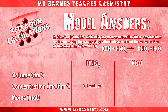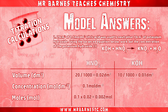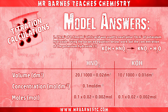Question two: work out the concentration of potassium hydroxide when 20 cm³ of nitric acid is used and its concentration is 0.1 molar. First, convert volumes into dm³ by dividing by 1000: 0.02 dm³ of nitric acid and 0.01 dm³ of potassium hydroxide. Second, calculate moles of nitric acid: concentration × volume = 0.1 × 0.02 = 0.002 moles. Third, the ratio of KOH to HNO₃ is 1:1, so moles of KOH = 0.002. Concentration of KOH = moles ÷ volume = 0.002 ÷ 0.01 = 0.2 mol/dm³.